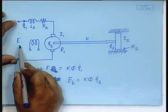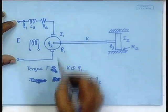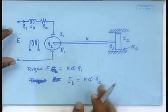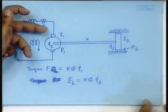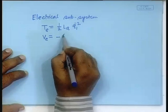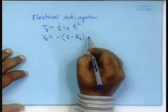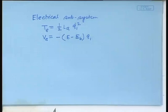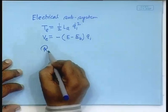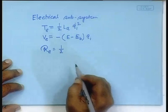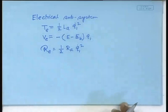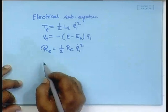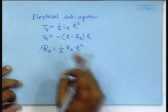The potential energy: Q₁ is the direction in which E is applied, but it is acted on in the opposite direction by the back EMF. So the total voltage effectively applied is E minus E_B acting in the direction of Q₁. The Rayleigh term for the electrical subsystem is half·R_A·Q₁-dot². From here we can write the momentum P₁.